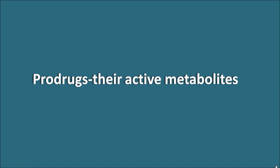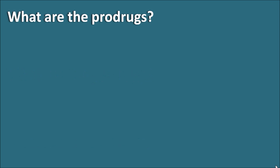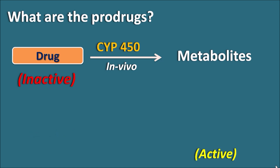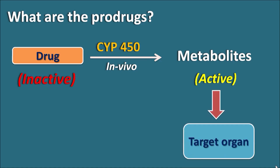In this video, let us see what are the different types of prodrugs and their active metabolites. A drug is given in vivo and it is converted to metabolites by metabolism via the cytochrome P450 system. If the drug is in an inactive form, it can be converted to an active metabolite. Such drugs which are inactive before administration but are converted into active metabolites after biotransformation are called prodrugs. For example, enalapril is a prodrug which is converted into enalaprilat in the body.